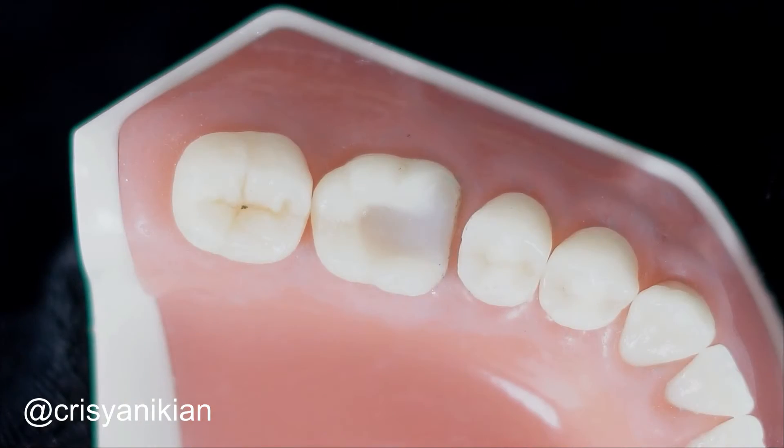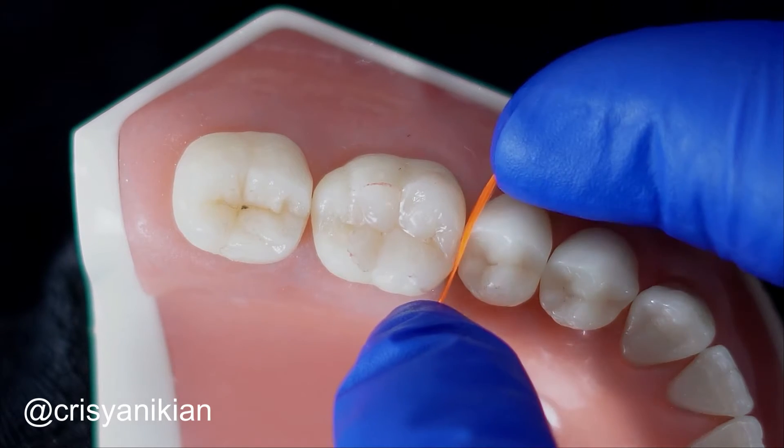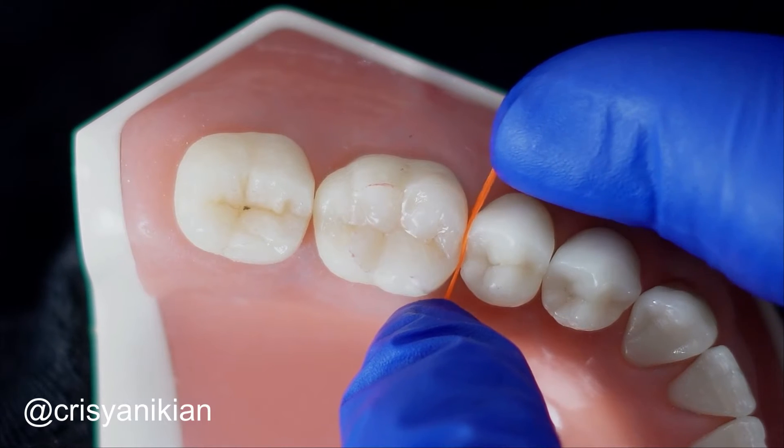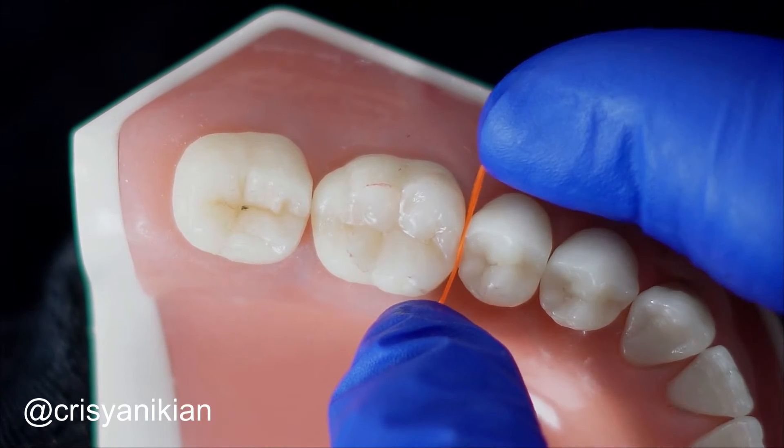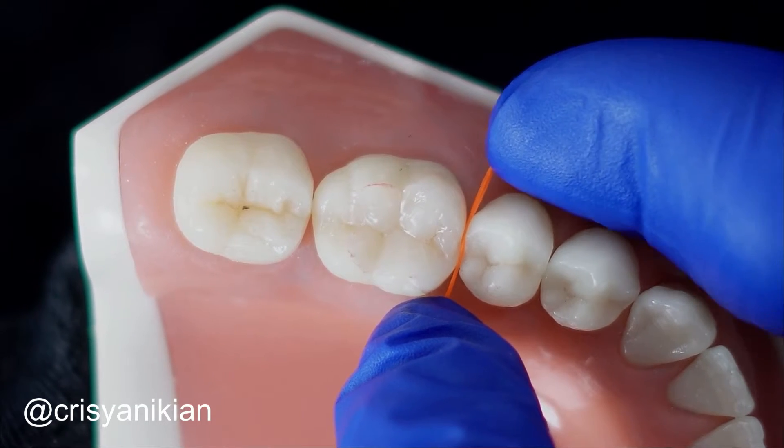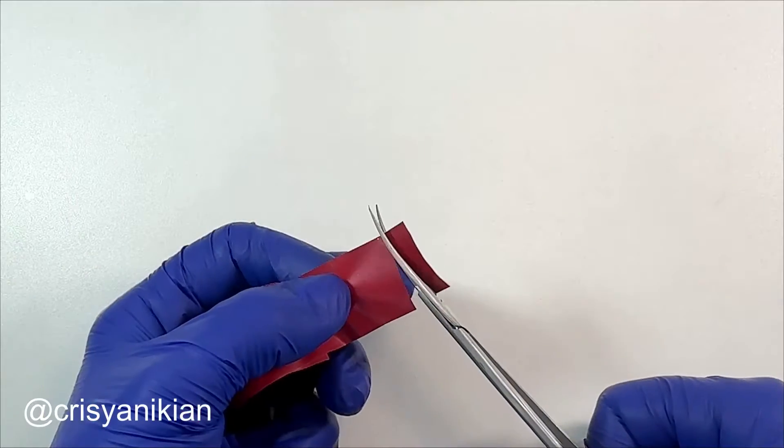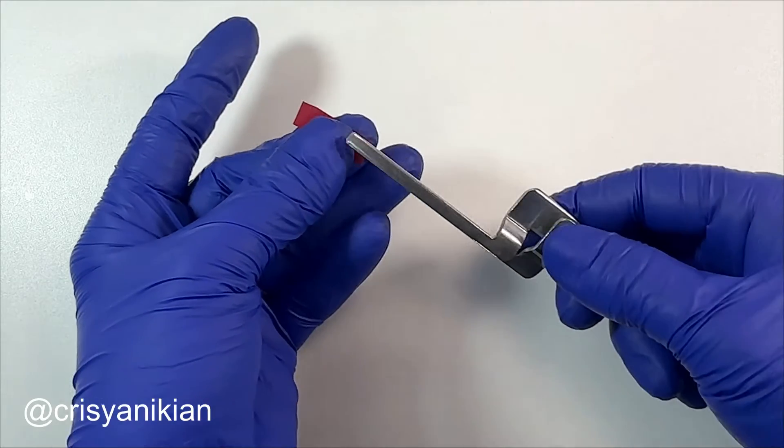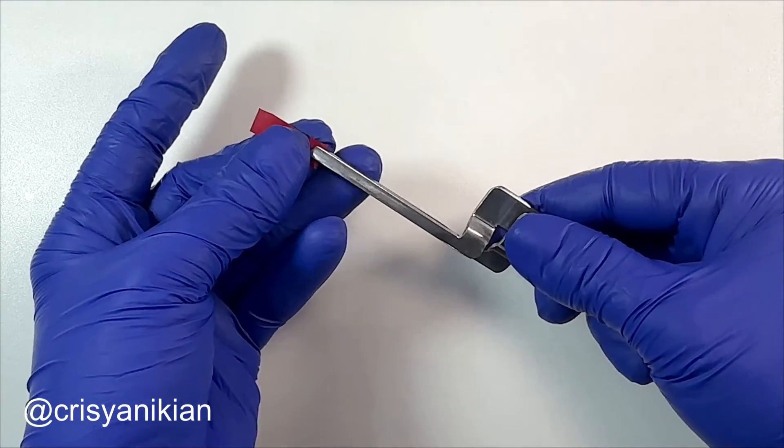Fit the onlay into position on the prepared tooth. If the onlay does not fit properly, the contact point may be too strong due to composite excess on the proximal surface. To check for excess, try passing dental floss with the onlay in position. If it has significant resistance, it indicates a strong contact. Use a small piece of thin carbon on a Miller tweezer to identify the contact area preventing the onlay from seating on the prepared tooth.